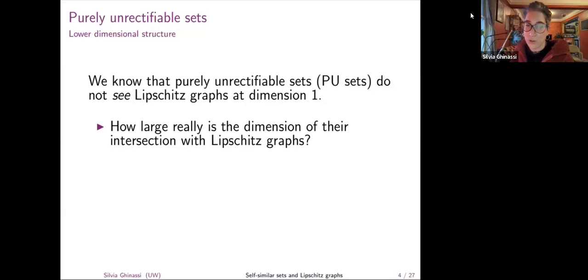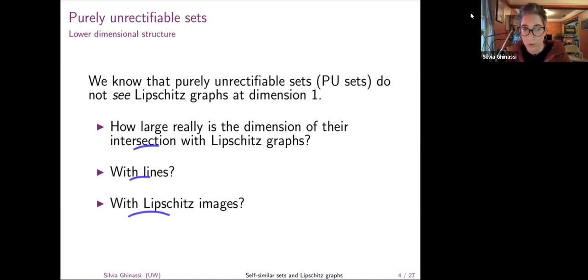A question that one may have, and this question actually came up in 2020, is okay, but what about a lower dimension? Do they see Lipschitz graphs at maybe some lower dimension, maybe it's one half, maybe it's close to one, maybe it's not. And one, so the question is, how large really is the dimension? How bad are purely unrectifiable sets? Are they bad at any intermediate dimension between zero and one, or are they good? And when I say good, I mean Lipschitz in some lower dimension.